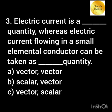Electric current is a dash quantity, whereas electric current flowing in a small elemental conductor can be taken as a dash quantity.